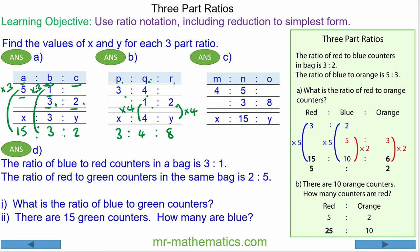For question c, we have the ratio m to n is 4 to 5, and n to o is 3 to 8. 15 is the lowest common multiple of 5 and 3, so 3 multiplied by 5 will make 15.